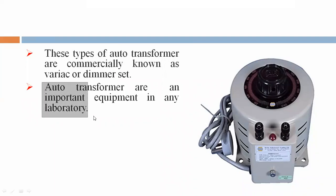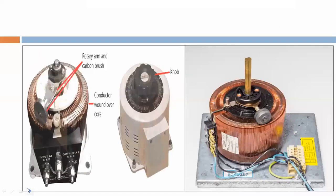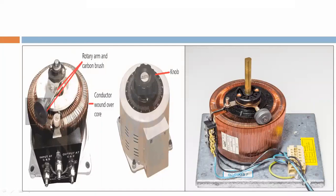These types of auto transformers are commercially known as a variac or dimmer set. Auto transformers are important equipment in any laboratory. This is the pictorial view of the auto transformer. We can see the rotary arm and carbon brush — it will be rotating and covering more winding.